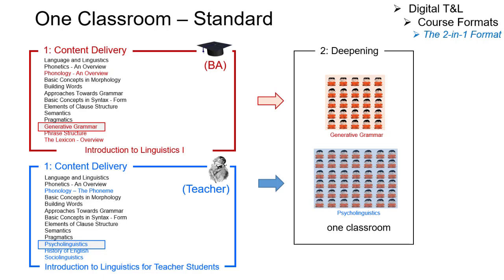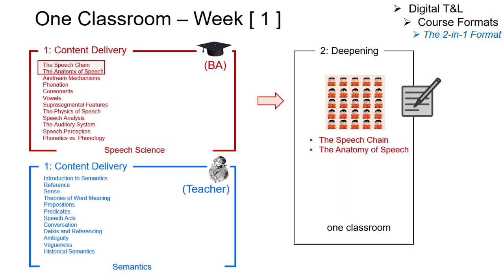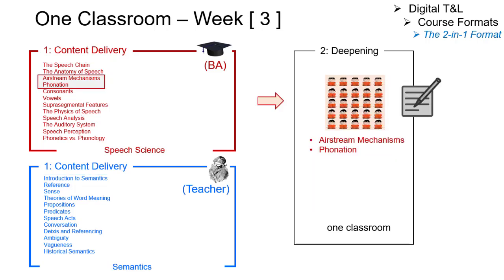There we either assign different exercises or, if the content is completely different, we reduce in-class attendance to a 14-day rhythm. In Week 1 we only serve the BA students, in Week 2 only the teacher degree students, in Week 3 again the BA students, and so on.